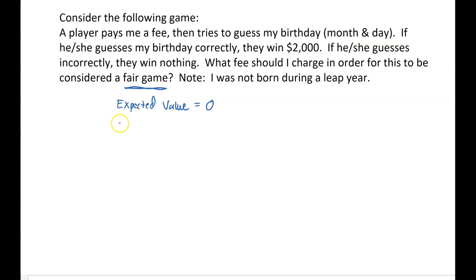Okay, so what we're going to do is let F be the fee, because this is what we're trying to find, and we're going to start with the probability distribution for this game. A probability distribution just means we want to list all the possible outcomes for the game and their corresponding probabilities.